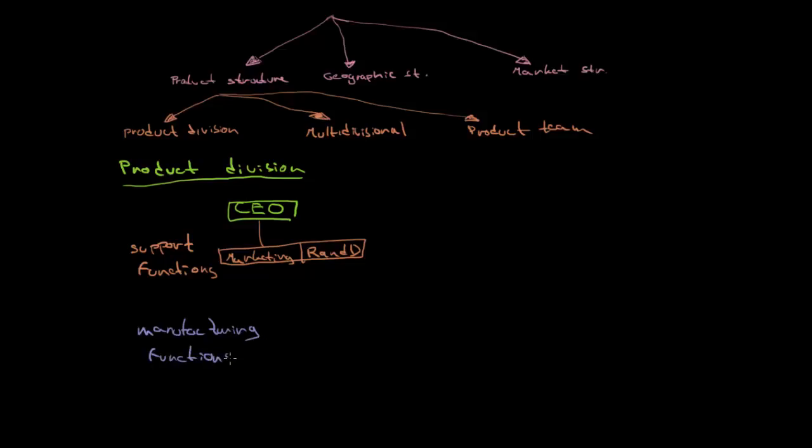We will split them according to our product. If we are in the case of Heinz, we can have the division of frozen vegetables, then we can have division of canned food, and we can continue this way.